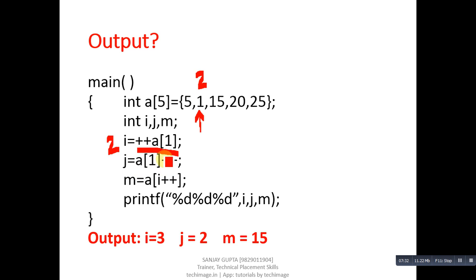Then a[1]++. Previous statement was pre-increment - first value of a[1] is incremented then assigned to i. This statement is post-increment, so first value of a[1] will be assigned into j, then it will increase. Now 2 will be assigned into j, then it will increase by 1, so it becomes 3.